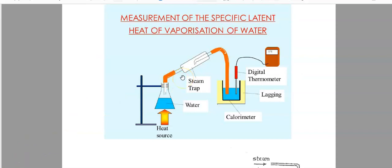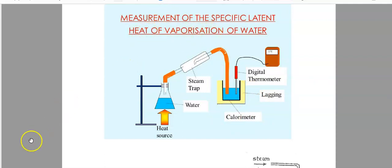Before we look at the experiment in more detail, here is a super quick run-through. The experiment involves creating steam by heating water. That steam goes through a delivery tube and into water in a copper calorimeter. The steam here loses energy, and that energy is gained by the water and the calorimeter. So we can put two things equal to each other: the energy lost by the steam and the energy gained by the water and calorimeter. From that equivalence we create a formula, and from that formula we will try to measure the specific latent heat of vaporization of the water.